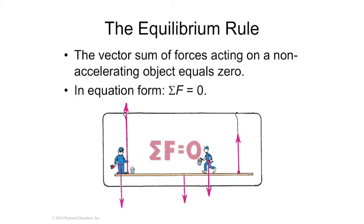As long as everything is not accelerating, it must be in equilibrium, and equilibrium means everything is balanced — whatever forces are going up are balanced with whatever forces are going down. Here's the example of painters on a scaffold: you've got ropes pulling up, gravity pulling on the masses going down, the board weighs something, both painters weigh something. Everything is balanced as long as it's not accelerating.